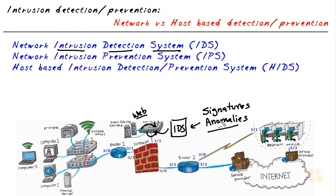The problem with an intrusion detection system is that by itself, it doesn't stop the attack from happening. It simply alerts us to the fact that there is an attack. One of the reasons is that once the IDS has seen the traffic, that traffic is already on its way to the server — the IDS is just getting copies of it. The acronym for a network-based intrusion detection system is simply IDS.